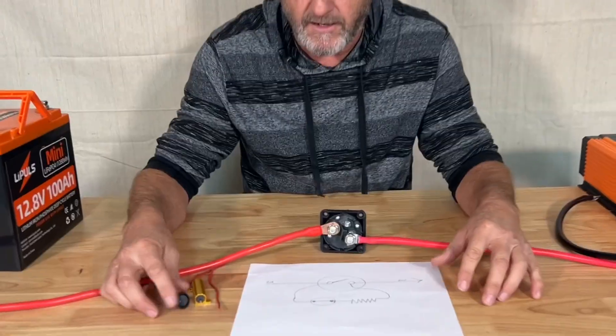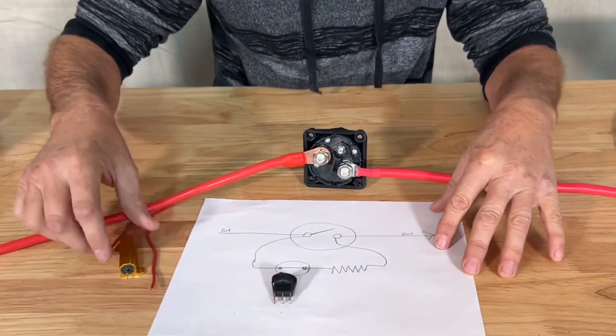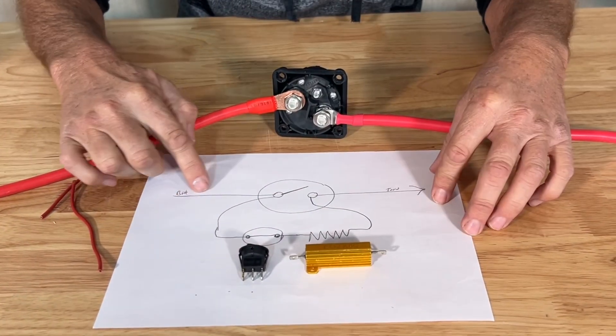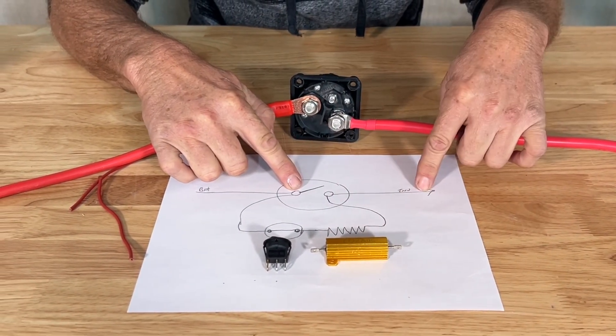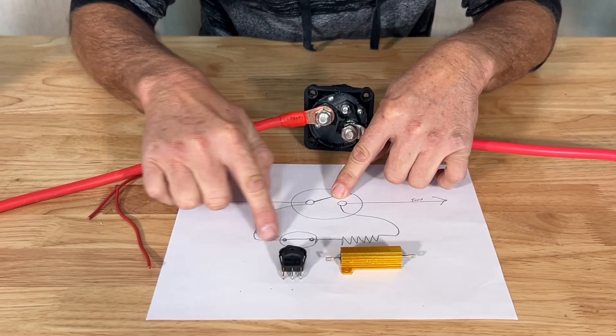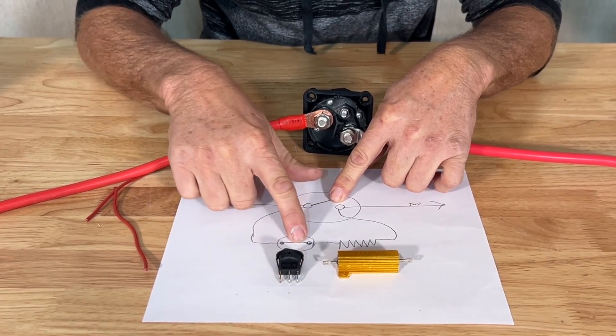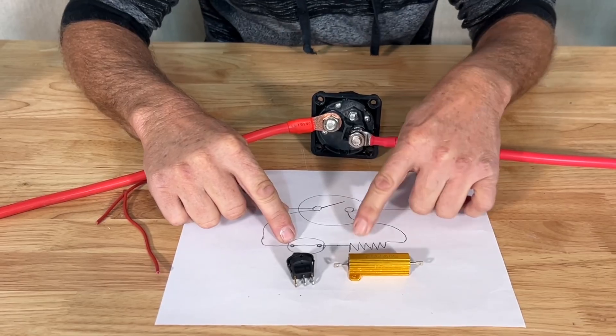this is what happens in this schematic when we push the switch down. The electricity comes through, it doesn't have a path right here, it comes around, it goes through the momentary switch that we're holding down in the closed position,